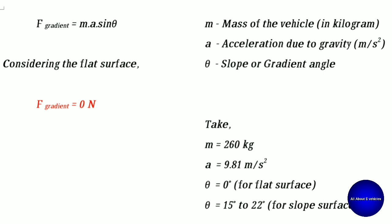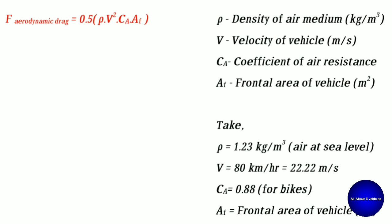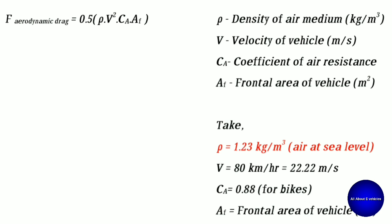Next: aerodynamic resistance. The formula is 0.5 × ρ × V² × CA × AF. This is the wind resistance, directly proportional to the square of the vehicle's velocity. Here ρ is the density of the air medium in kg/m³, V is the vehicle velocity in m/s, CA is the coefficient of air resistance, and AF is the frontal area of the vehicle in m².